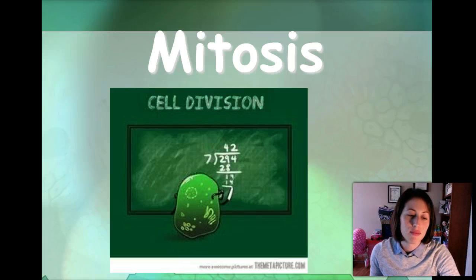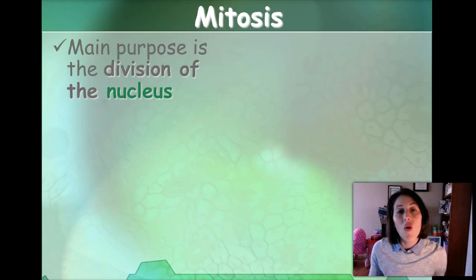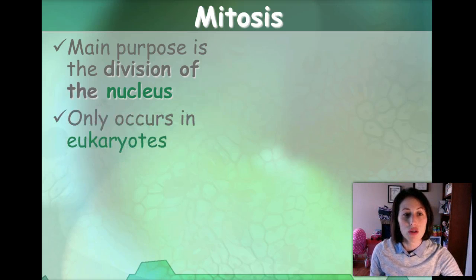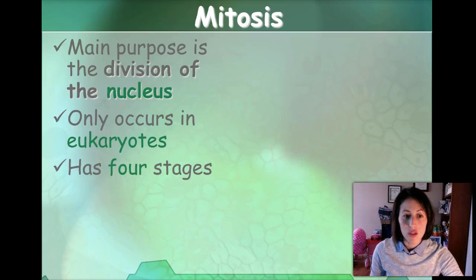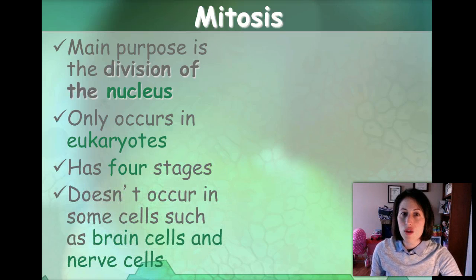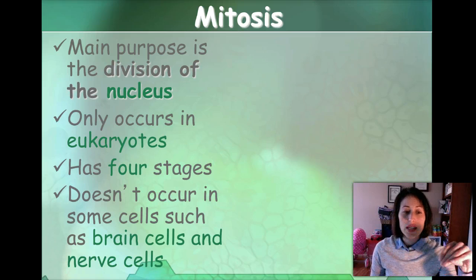So let's talk about some cell division. Mitosis — the whole point of mitosis is for the nucleus to divide, and this is going to help the cell actually become two. It only occurs in eukaryotic cells, and there are four stages. The reason it only occurs in eukaryotic cells is because eukaryotes are the only ones that have a nucleus. Brain cells and nerve cells won't go through mitosis — you are born with the amount of brain cells and nerve cells that you will ever have. Unfortunately, sometimes those get damaged by choices we make or accidents that occur, and these can't be replicated again.